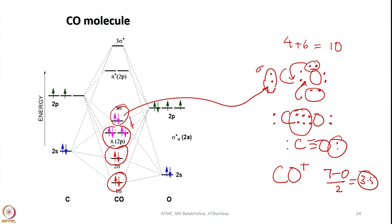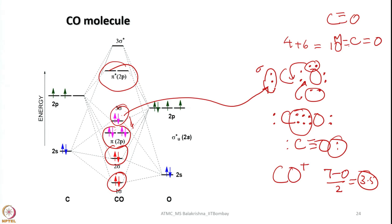When CO acts as a pi acceptor ligand, metal electrons flow into the CO pi-star orbital. As more electrons go into pi-star, the C-O bond order decreases — the triple bond can approach a double bond as metal-to-carbon bond order increases. A carbon monoxide ligand can accept between 0.2 and 1.2 electron density into its pi-star. Accordingly, the metal-to-carbon bond is strengthened to the same extent that the carbon-to-oxygen bond is weakened.